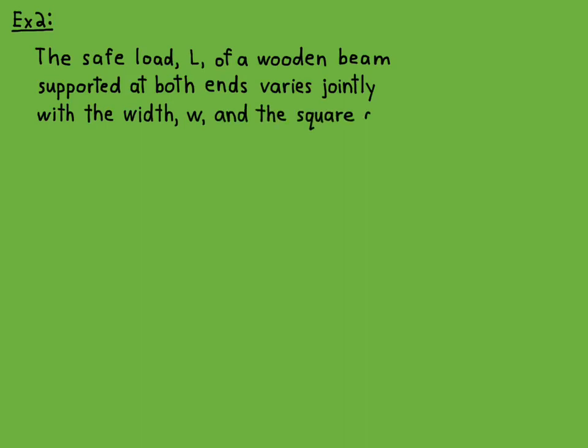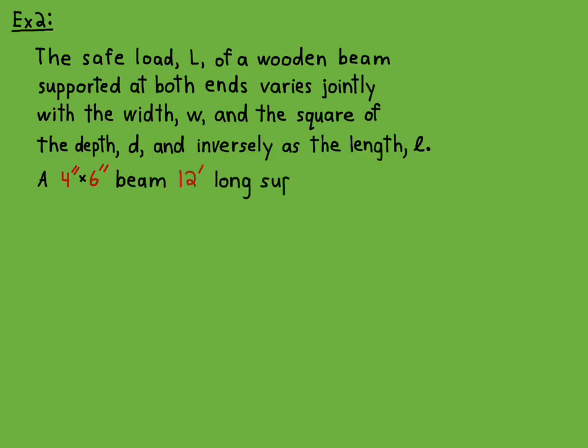The safe load L of a wooden beam supported at both ends varies jointly with the width w and the square of the depth d, and inversely as the length little l.